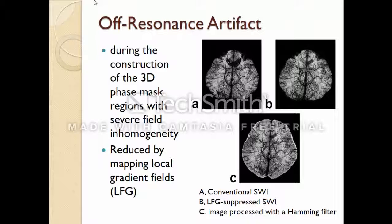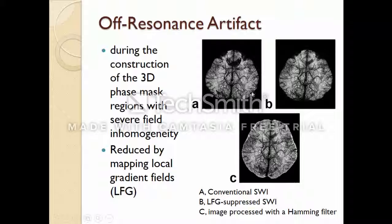Another artifact is the phase mask artifact. This arises during the construction of the 3D phase mask in regions with severe field inhomogeneity due to off-mask effects. To reduce this artifact, an approach is presented to map local field variants using 3D SWI data without phase unwrapping, and that method is quite effective. Here you can see the conventional SWI, and after applying the local gradient fields and processing with a Hamming filter, the image quality improves significantly.